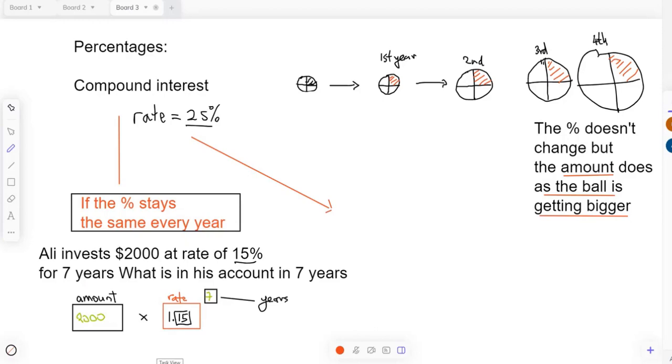1.15. And then all you've got to do is literally just go to your Casio calculator and type that in. So 2000 times by 1.15 to the power of seven. You should have a power button, and then put a seven in there. That's it. That is compound interest.